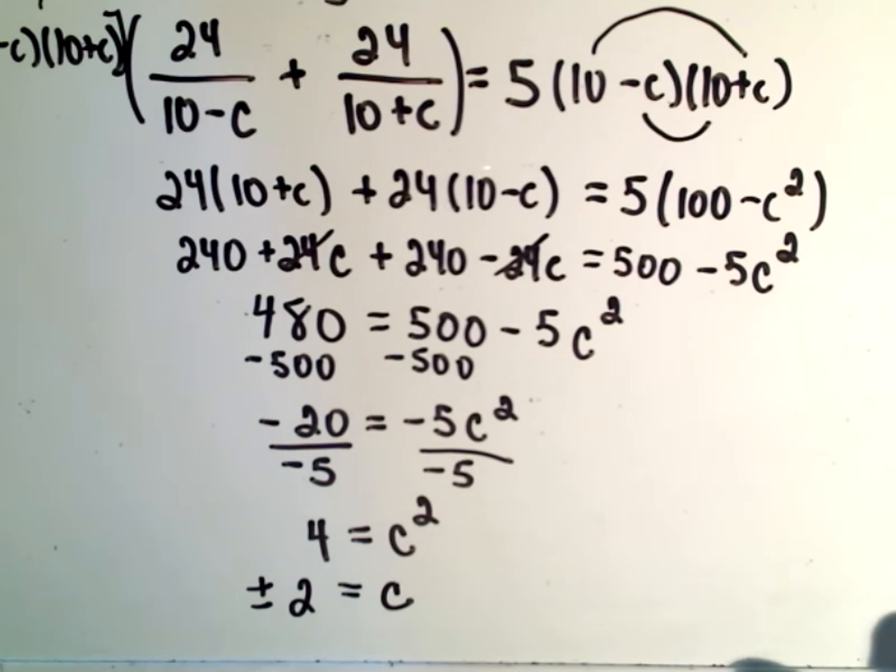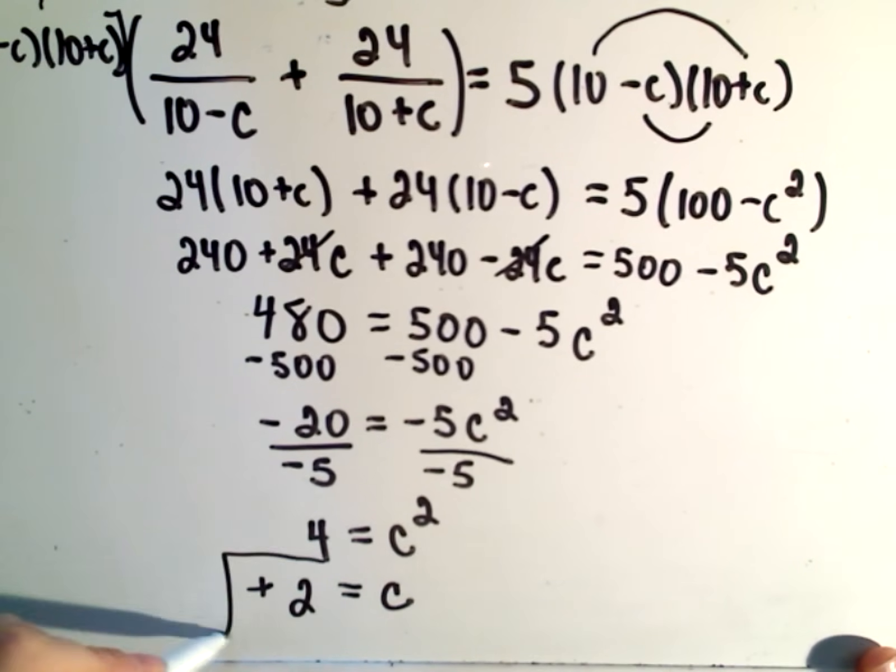But again, in this situation, C represents the current or the speed and we don't have negative speeds. So that tells us that the current of this stream or river or whatever it is, is 2 miles per hour.